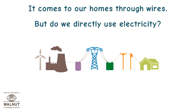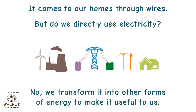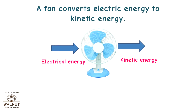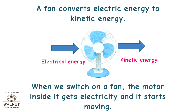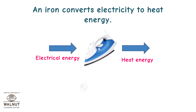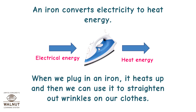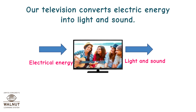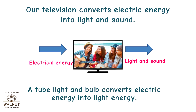But do we directly use electricity? No — we transform it into other forms of energy to make it useful to us. A fan converts electric energy to kinetic energy; when we switch on a fan, the motor inside it gets electricity and starts moving. An iron converts electricity to heat energy — when we plug in an iron, it heats up and we can use it to straighten wrinkles on our clothes. Our television converts electric energy into light and sound, and a tube light or bulb converts electrical energy into light energy.